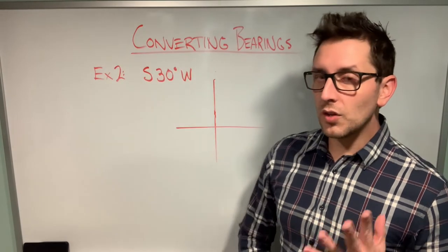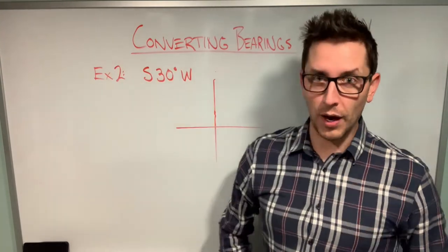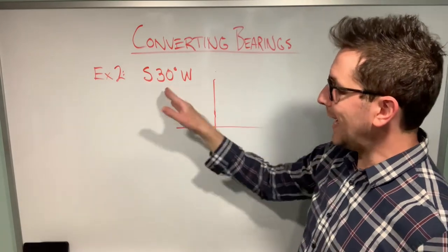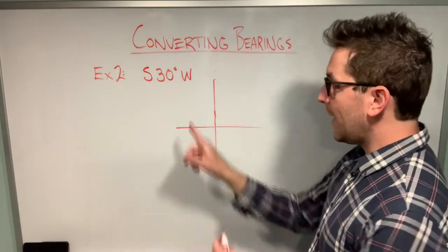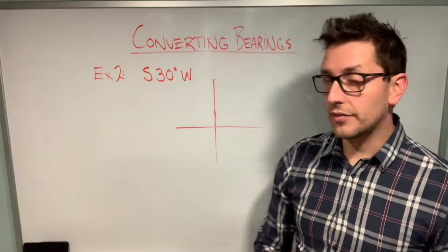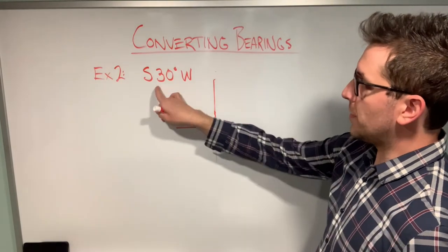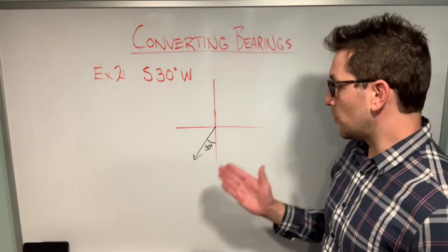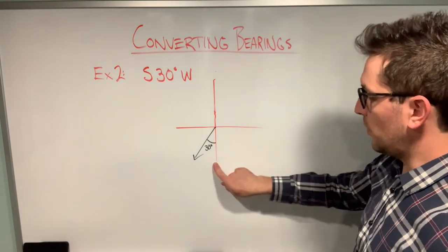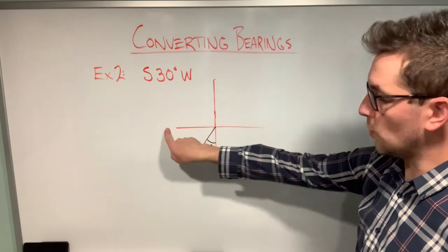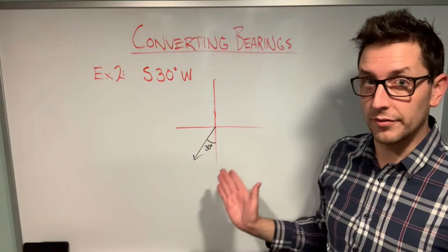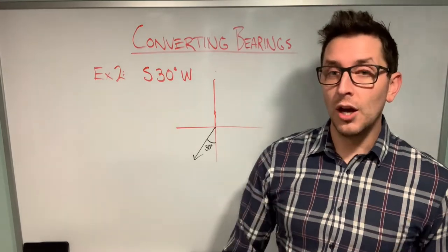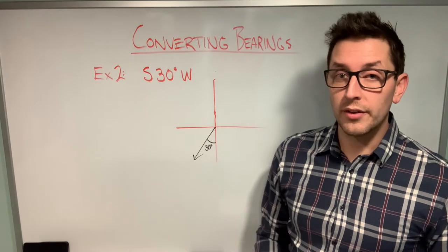For the final example, we'll convert from quadrant bearing to true bearing form. Quadrant bearings give us a starting direction, an angle to rotate through, and a target direction. For S30°W, we start on the southern axis, rotate 30 degrees in the west direction. Drawing a quick sketch, we can see the vector starts at the southern axis and rotates 30 degrees toward the western axis.